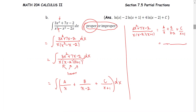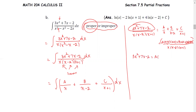We write the denominator as a common denominator: x times x minus 2 times x plus 1. We multiply A by x minus 2 times x plus 1, multiply B by x and x plus 1, and multiply C by x and x minus 2. That means the numerator on the left equals the numerator on the right: 3x squared plus 7x minus 2 equals A times x minus 2 times x plus 1 plus B times x times x plus 1 plus C times x times x minus 2.